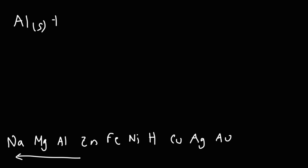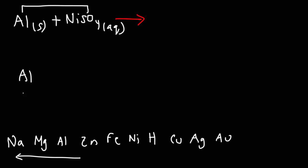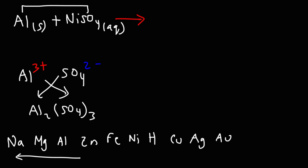Let's react aluminum metal with aqueous nickel sulfate and predict the products of this chemical reaction. Aluminum is going to pair up with sulfate. When aluminum gives up its three valence electrons, it turns into the Al 3+ cation. Sulfate is a polyatomic ion you need to commit to memory. Using the crisscross method, they generate the chemical formula Al₂(SO₄)₃. We need two aluminum ions for a total charge of 6+ and three sulfate ions for a total charge of 6−, so the charges balance each other out.